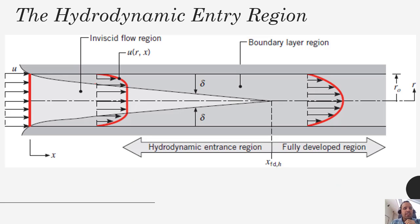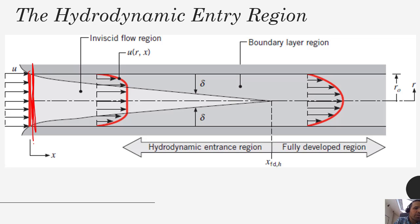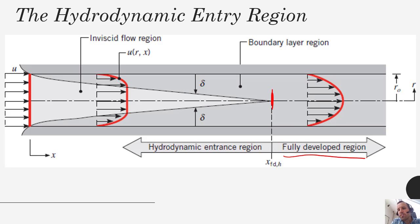Looking at this from the pipe entry perspective: at the entry of our pipe — or square channel, or two parallel plates — we have nice plug flow coming in. Over time, because of viscous effects, boundary layers form and the velocity profile develops. As those two boundary layers converge, we reach the fully developed region. Once there, as long as the channel dimension doesn't change, the velocity profile remains essentially the same throughout. Convection is then governed by T_surface minus T_mean.